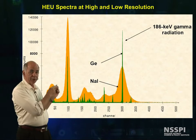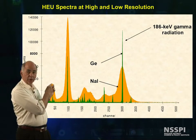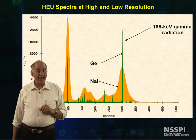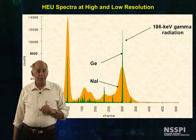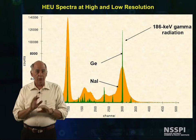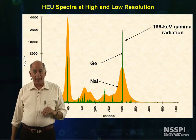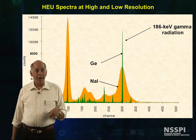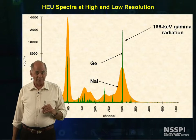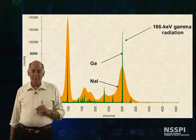Here is the effect of superior resolution of high purity germanium compared to sodium iodide for highly enriched uranium. The two spectra are superimposed — the high purity germanium in green and the sodium iodide in burnt orange. The burnt orange is obviously inferior.